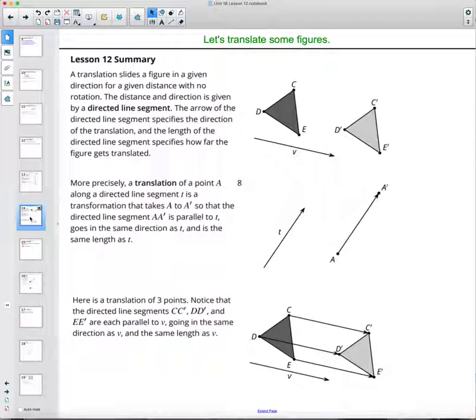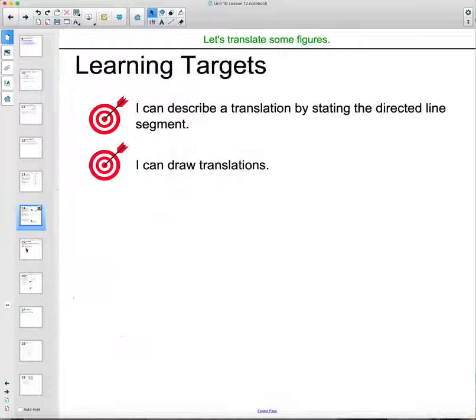So then you also have your lesson summary in your student workbook that you can read through, remembering everything that we talked about in the lesson, looking at moving by directed segments, that the directed lines will be parallel to each other, moving an original shape to an image. C to C prime, D to D prime, E to E prime, those will be the same length as the directed segment as well as parallel to them. Your learning targets for this lesson were that you could describe a translation by stating the directed line segment, that you could describe a statement and drawing translations.